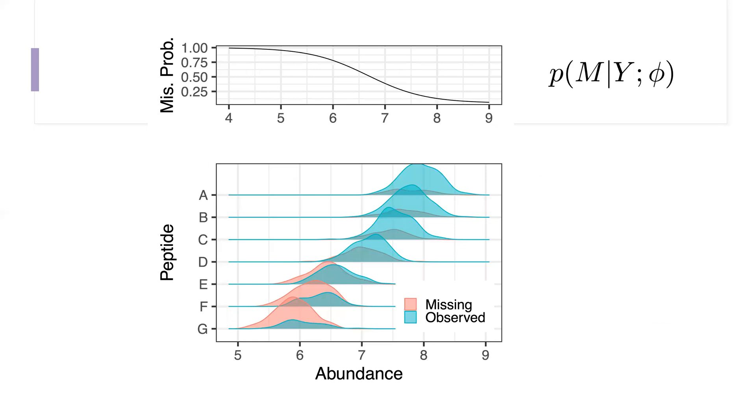Here's a cartoon of peptide intensities or abundances and the distribution of missing values and observed values for each peptide across multiple groups. In this particular example, I've set up a missingness model in which the probability that a peptide is missing is a function of its abundance. The lower the abundance, the higher the probability that that peptide is missing. The higher the abundance, the more likely we are to observe that.